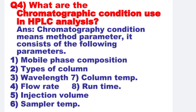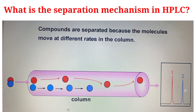Next: What are the chromatographic conditions used in HPLC analysis? Chromatographic conditions mean method parameters. They consist of the following: Number 1, mobile phase composition. Number 2, types of column. Number 3, wavelength. Number 4, flow rate. Number 5, injection volume. Number 6, sampler temperature. Number 7, column temperature. Number 8, run time.